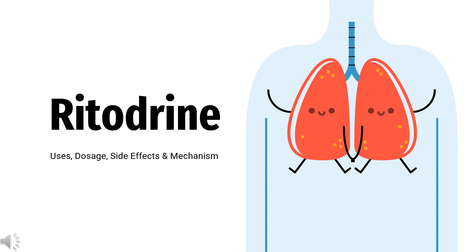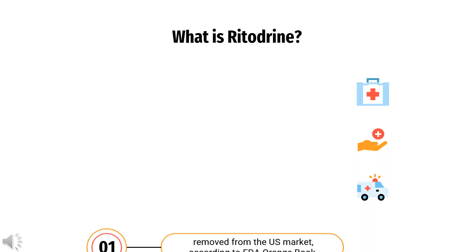Ritadrine is an adrenergic beta-agonist used to treat premature labor. In this video, we will cover: What is Ritadrine? What is Ritadrine used for? Contraindications. What are the side effects of taking Ritadrine? How does Ritadrine work? How to use Ritadrine?